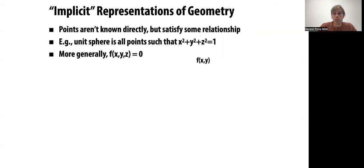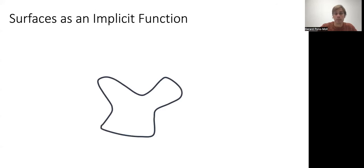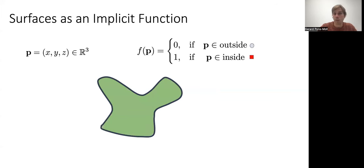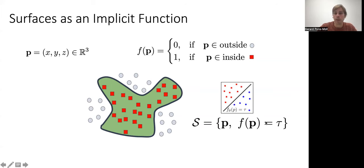For implicit representations of geometry, points are not known directly but satisfy some relationship. For example, an implicit surface is defined by x² + y² + z² = 1 — that's the unit sphere. We don't necessarily need a mathematical equation; we can have a function stored in our computer such that for every (x, y, z) it gives us a number defining whether the point is inside or outside the surface — for example, 0 if outside and 1 if inside. The surface is all points at the decision boundary between inside and outside.